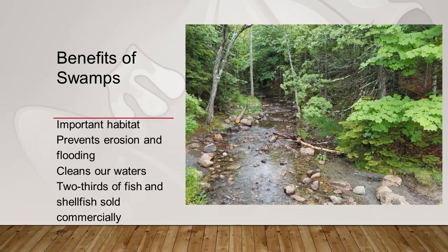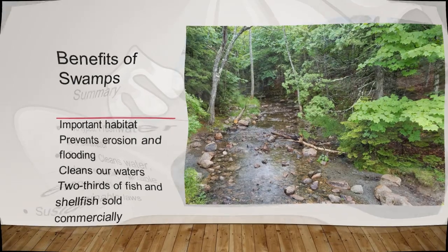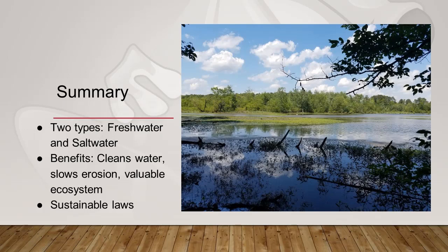We're still losing acreage of swampland, but hopefully our knowledge of the benefits swamps bring to our world will encourage us to sustain this valuable resource. We want the benefits of swamps to continue for the next generation and forward. To summarize: swamps are filled with water some or most of the year and have woody plants growing in them. There are two types — freshwater and saltwater. Swamps benefit the life that calls them home, help prevent flooding and erosion, clean our waters, and provide two-thirds of the fish and shellfish that make it to our tables. Now that you know how great swamps are, maybe you'll see them not as bad places, but as beautiful contributions to the earth. Each swamp is unique, just like you.